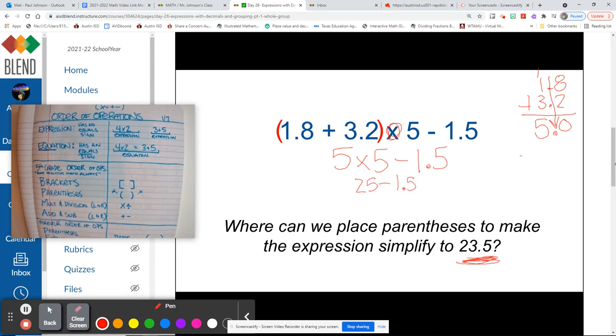So we had 25 minus 1 and 5 tenths, and then 25 minus 1.5, I bet you can guess what it is, but we're going to go ahead and do it anyway.